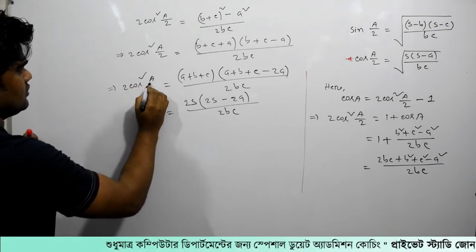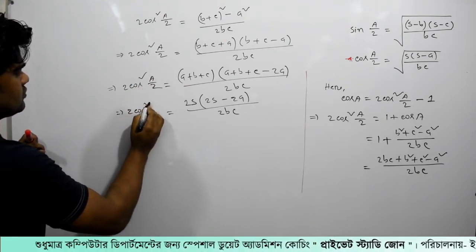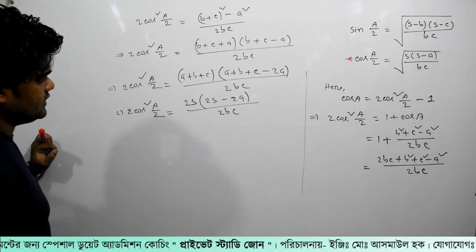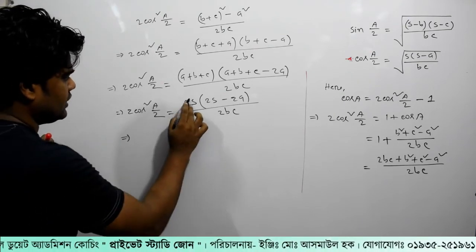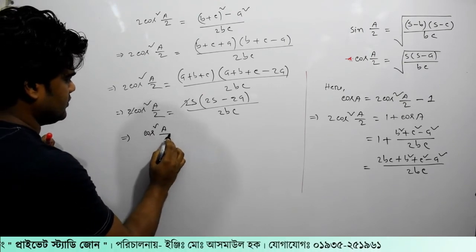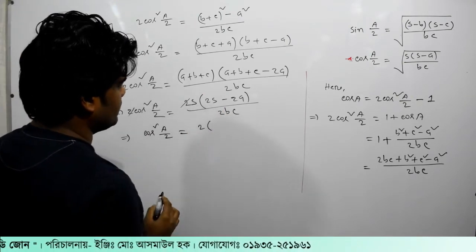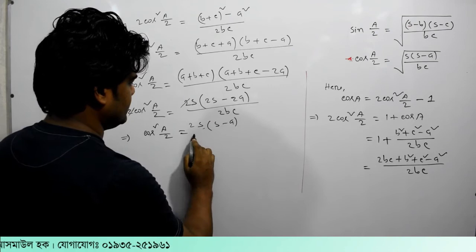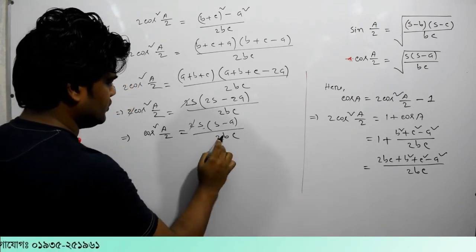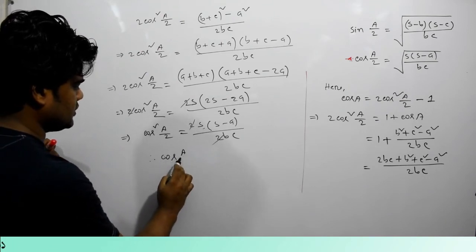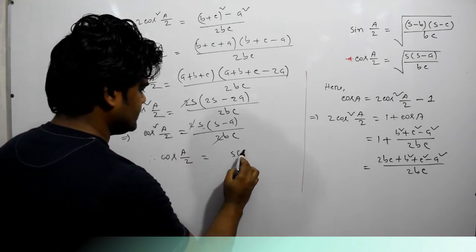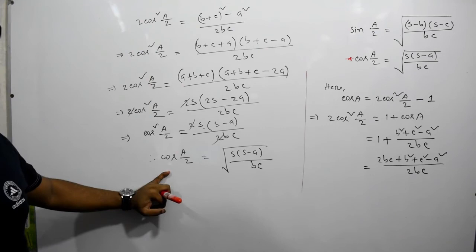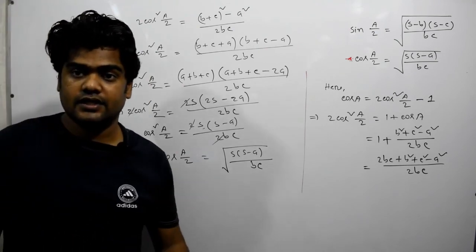2 cos²(a/2). Now I have a 2 and a 2 to cancel out, so we have cos²(a/2). We have 2 common terms: 2s and 2(s minus a), divided by 2bc. So cos(a/2) equals the square root of s(s - a) divided by bc.